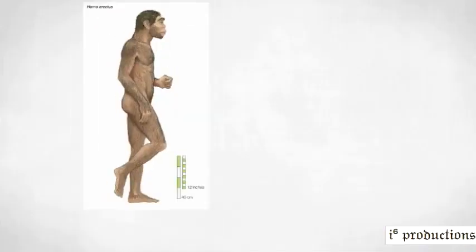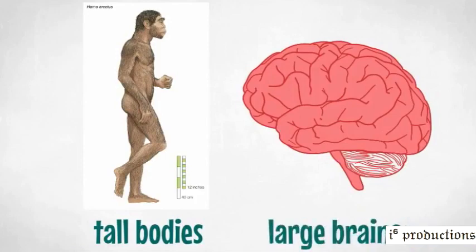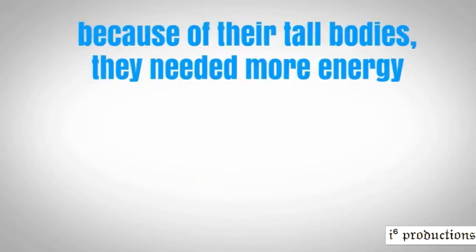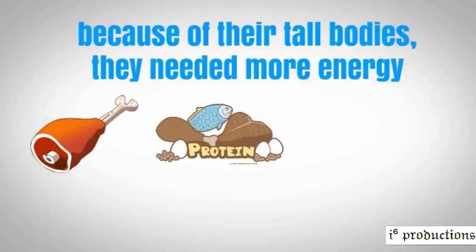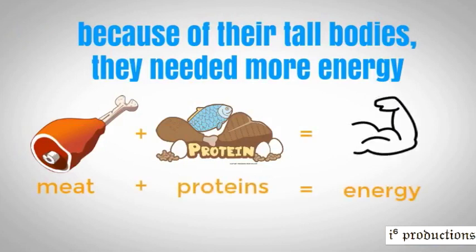The Homo erectus had tall bodies and large brains and so they needed more energy on a daily basis for them to function. To be able to get this energy faster, eating meat and other types of protein was one of the best solutions because it could be quickly digested, making it more possible to absorb nutrients with a shorter digestive tract.